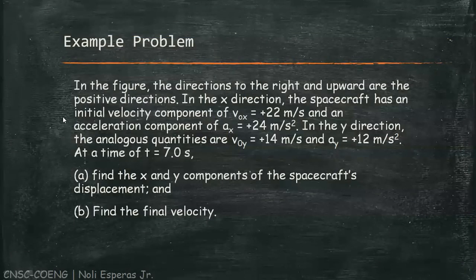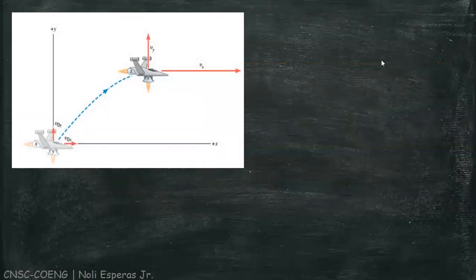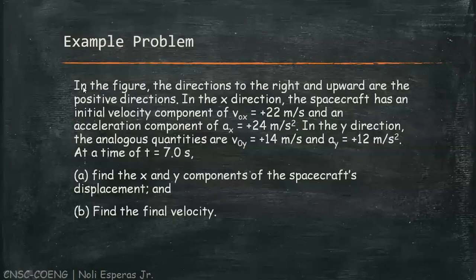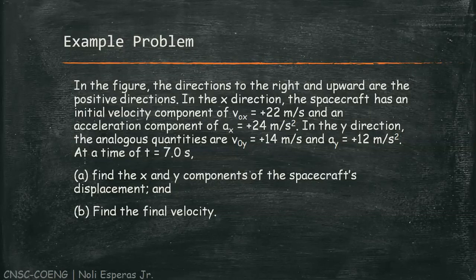Let's have an example. In the figure to be presented in the next slide, the directions to the right and upward are the positive directions. In the x-direction, the spacecraft has an initial velocity v0x of 22 meters per second and an acceleration component ax of 24 meters per second squared. In the y-direction, v0y is 14 meters per second and ay is 12 meters per second squared.